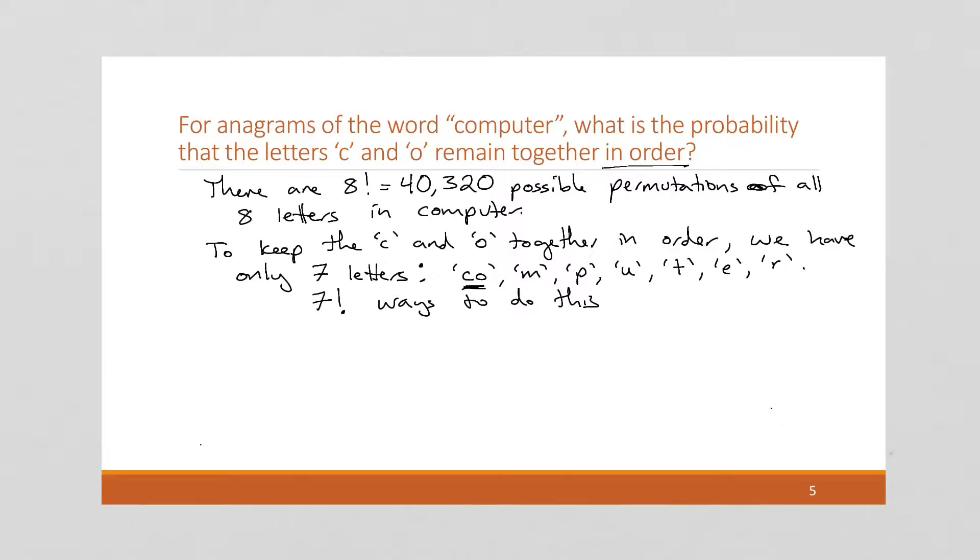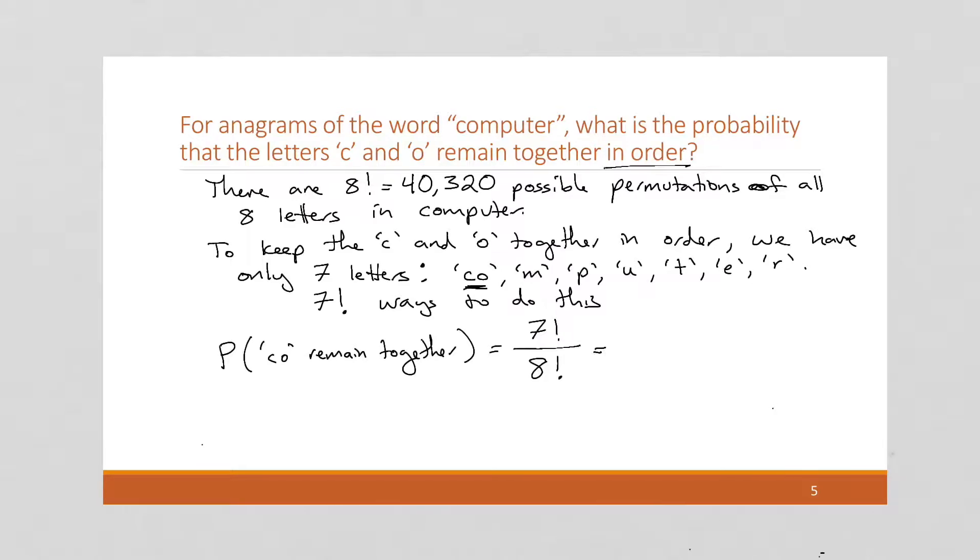Well, let's figure out the probability now. So the probability that C and O remain together. Our event space is going to be 7! values in size, and our sample space is 8! in size. And I want to show you an interesting trick to do this so that you don't have to use a calculator, because some of these big values can get very big in factorial. I'm going to write these out by the definition. So this is 7 times 6 times 5 times 4 times 3 times 2. There's technically a one there, but that doesn't really do anything. And this is 8 times 7 times 6 times 5 times 4 times 3 times 2.